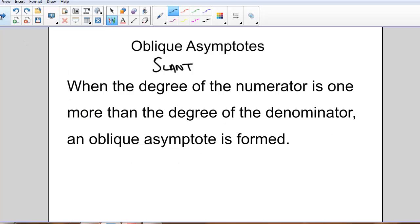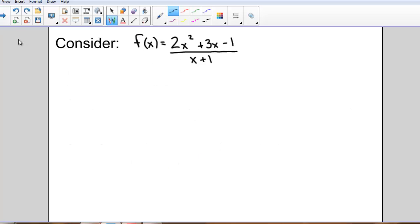We'll look at this definition with an example. So let's consider the function 2x squared plus 3x minus 1, so a quadratic, over a linear function x plus 1.